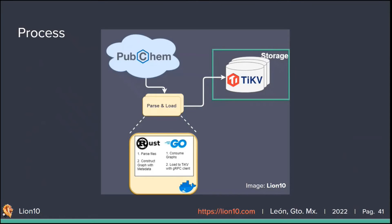Specifically, the Rust component is responsible for decoding the content of the chemical data and encoding it into graph format, which contains the metadata corresponding to the compound. The Go component allows us to make a connection through gRPC with the TiKV server in order to achieve an efficient data load. These components were containerized to enable parallel execution and thus drastically reduce the processing and load time into our distributed storage systems.